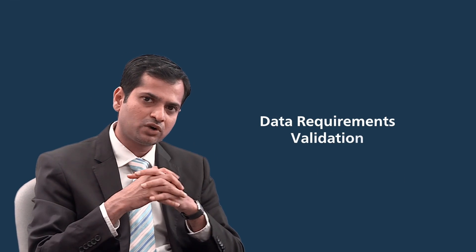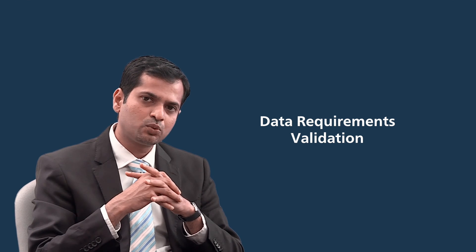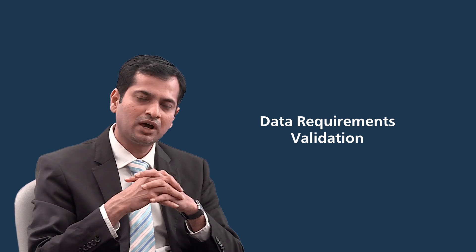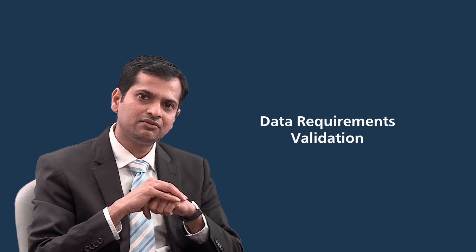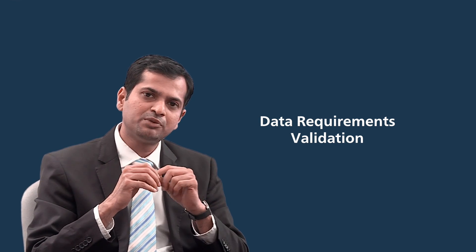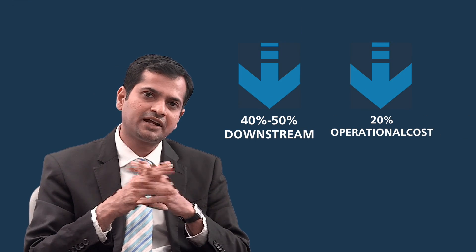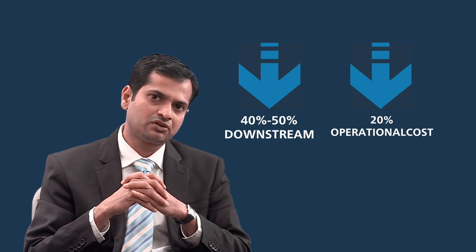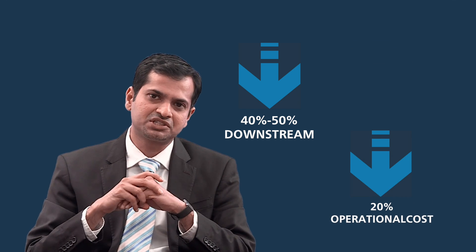So from that angle, it is important to capture the data requirements very clearly. We have implemented a process called DRV — Data Requirement Validation — which identifies gaps at the data level much earlier in the cycle. If a DRV is implemented in a robust manner and you invest upfront, it is certain that you will save about 40 to 50% of your program costs downstream, and your operational costs will come down by 20%.